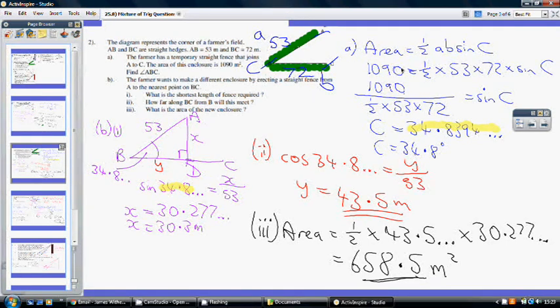So, anyway, the area, which is 1090, equals half, times A, which is 53, times B, which is 72, times sin, my unknown angle.